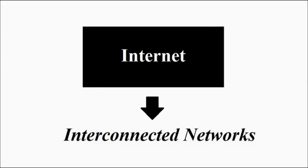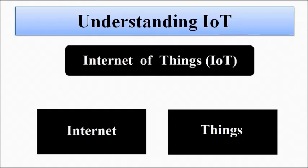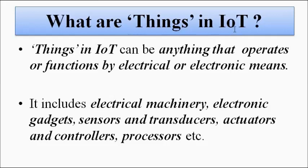Now, what are the Things in IoT? As I said, the things in IoT can be anything that is powered and operated through electrical or electronic means. Anything powered electrically qualifies as a thing in IoT, meaning it can be connected to the Internet and become part of the IoT network. Examples include electrical machinery and gadgets such as air conditioners, refrigerators, microwaves, various sensors, actuators, transducers, controllers, and processors — anything powered by electrical or electronic means falls under the category of things from the point of view of IoT.